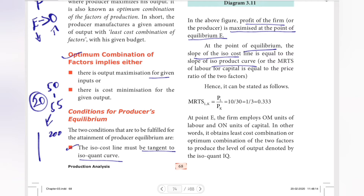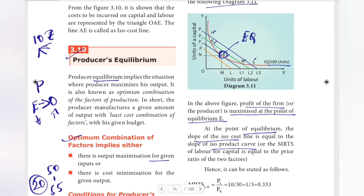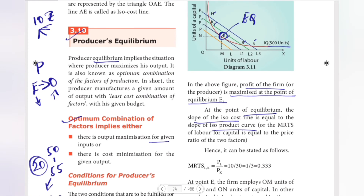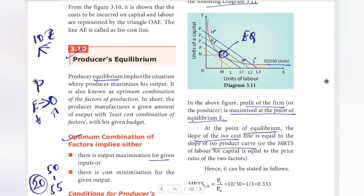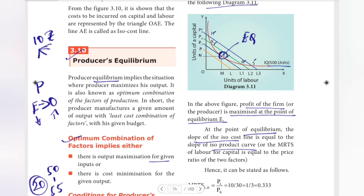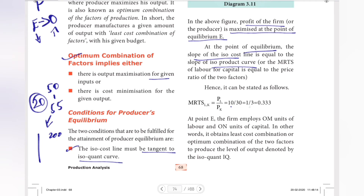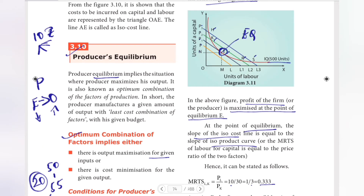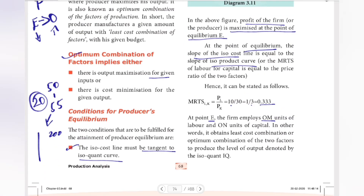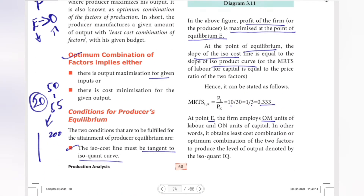Mathematically, the equilibrium condition is: MRTS of labour for capital equals PL divided by PK — the price of labour divided by the price of capital. For example, 10 divided by 30 equals 0.33. At point E, the firm employs OM units of labour and ON units of capital, obtaining the least cost combination.